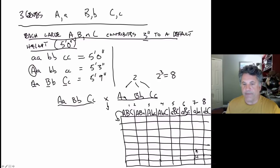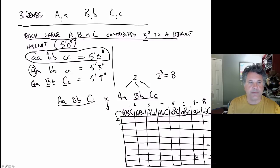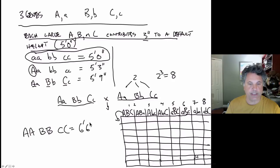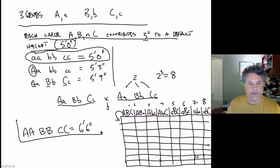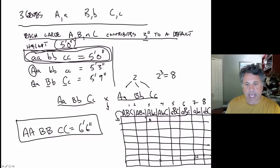You would get everything varying from the triple homozygote of small alleles at five feet zero inches, all the way up to a triple homozygote for the large alleles at six feet six inches — eighteen inches above the base height of five feet zero. This model shows that you would get a few very tall individuals, a few very short individuals, and basically everything in between based on the combinations of large alleles inherited.